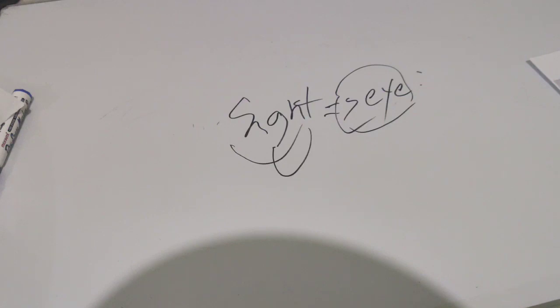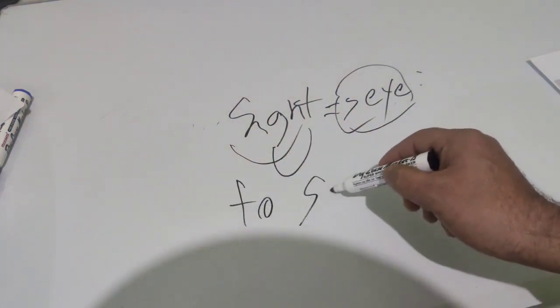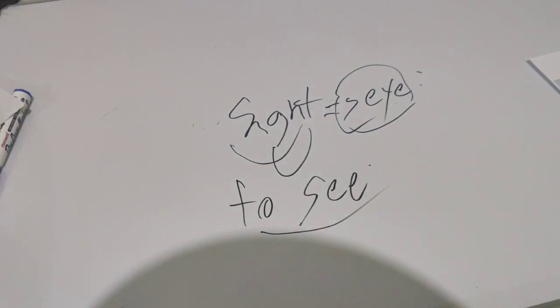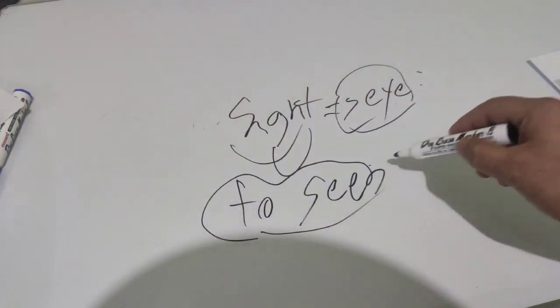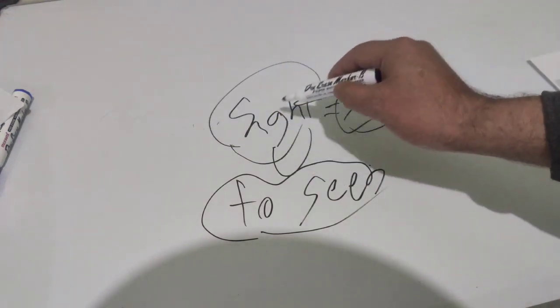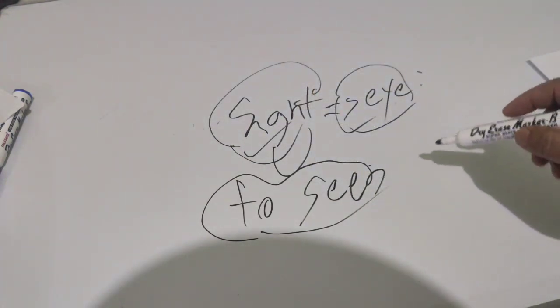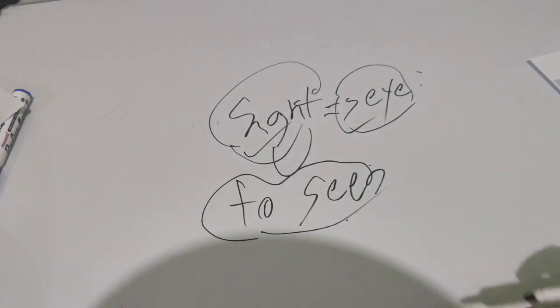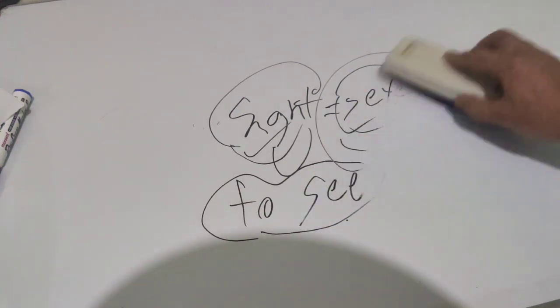We see with the eye. The sight is the sea and the organ is the eye. The eye sight. Let's move to another sense.